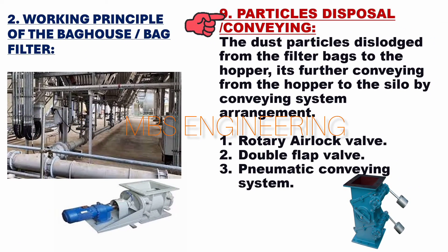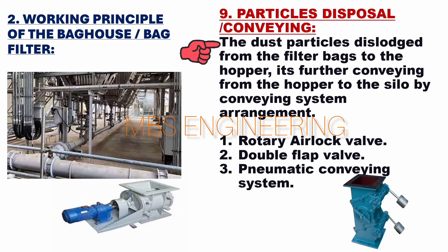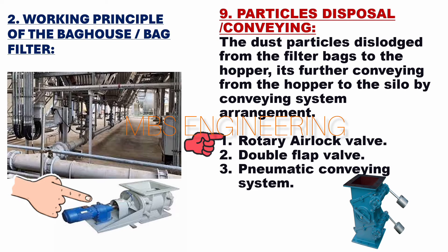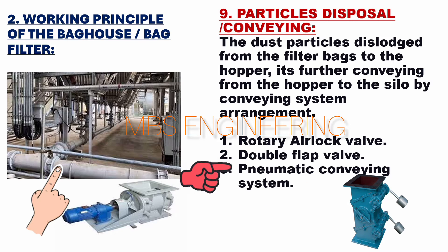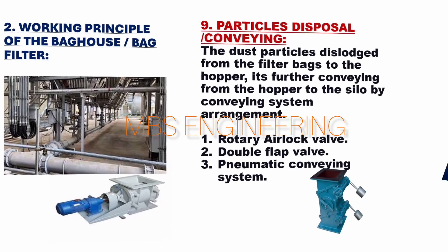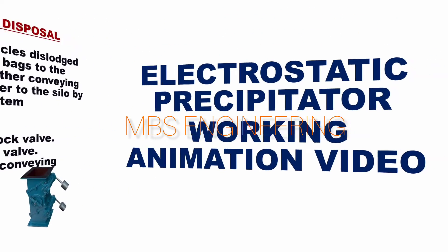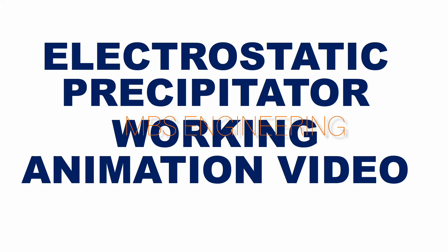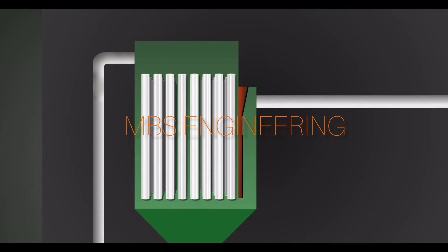Step 9 — Particle Disposal and Conveying: The dust particles are dislodged from the filter bags to the hopper and further conveyed from the hopper to the silo by the conveying system. The dust disposal arrangements used for the bag house system include: the rotary air lock valve, the double flap valve, and the pneumatic conveying system. Please refer to the pulse jet bag house working animation video for better understanding.